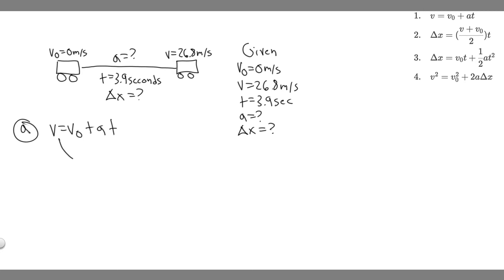notice that we have v, we have v sub zero, and we have t. So the only variable left is acceleration. So we can just go ahead and solve for it.